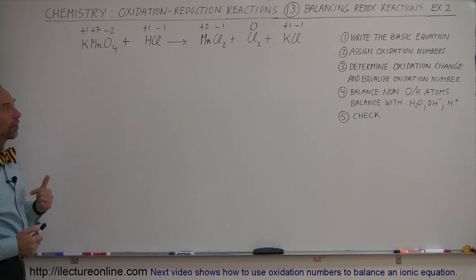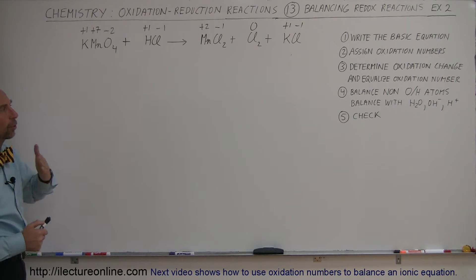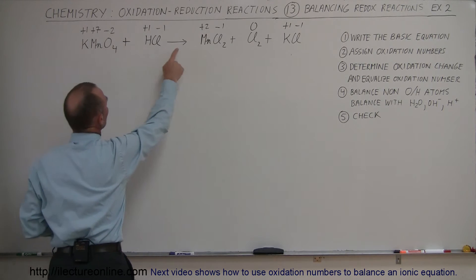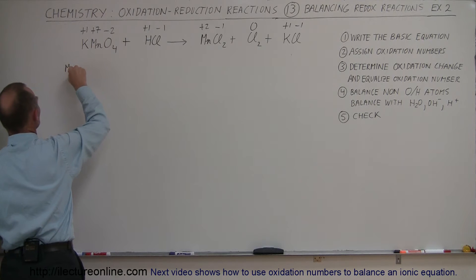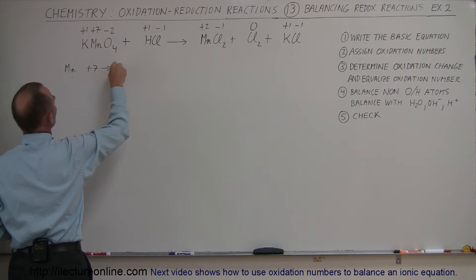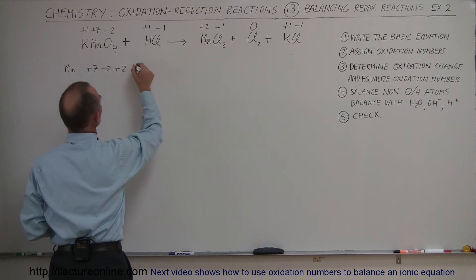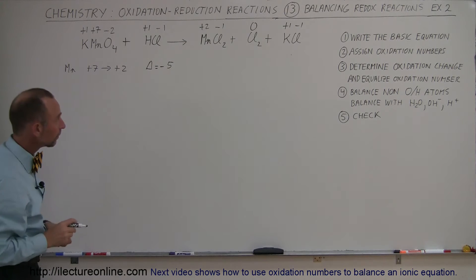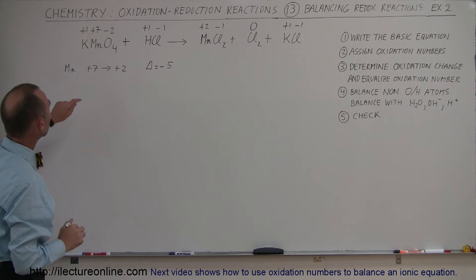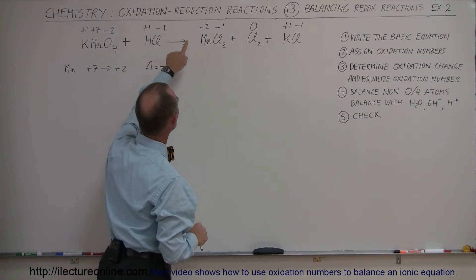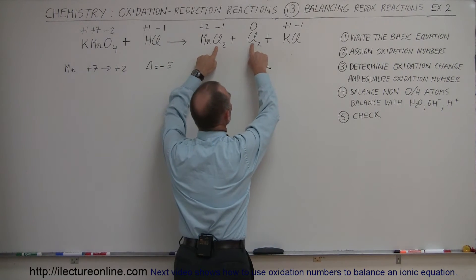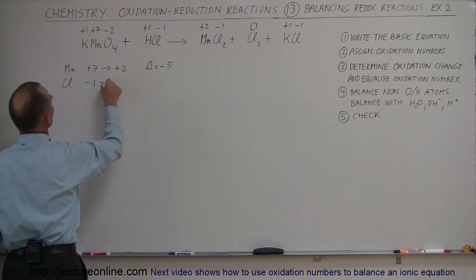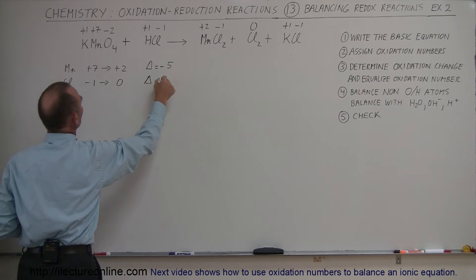Next step: we determine the changes. We see that manganese goes from plus 7 to plus 2 — that means a reduction of 5, so delta equals minus 5 in the oxidation number. Now we see that chlorine also changes. On the left side, chlorine is minus 1. It is still minus 1 in some places, but it's 0 over there. So chlorine goes from minus 1 to 0 — that's a change equal to plus 1.